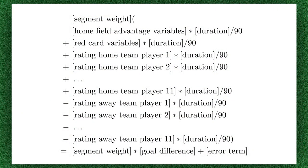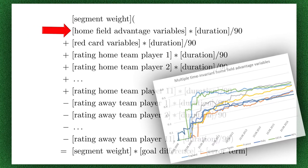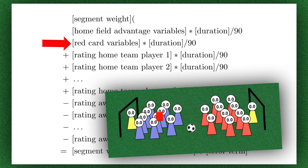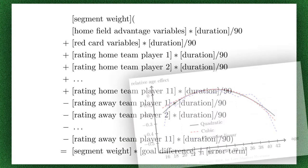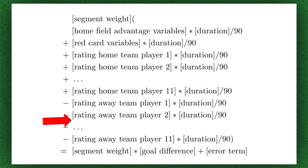The model that we use is therefore based on the idea that the ratings assigned to players should be related to the goal differences observed when the different players are in action. The model currently takes into account the home field advantage and players being sent off after red cards. In addition, the ratings of players depend on both the age of the players, as well as the ratings of the opposition and teammates.